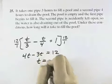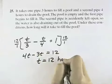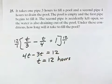4 minus 3 is T, so T equals 12 hours. So under these conditions, it would take 12 hours to fill the pool.